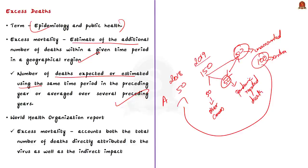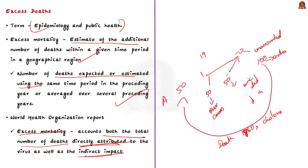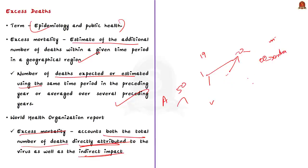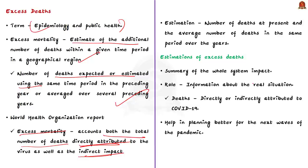India's death registration system started in the 1860s in response to a cholera pandemic — before that, births were registered but deaths were not. As per the WHO report, COVID-19 excess mortality accounts for both deaths directly attributed to the virus and indirect impacts such as disruption to essential health services. These estimations of excess deaths summarize the whole system impact of the pandemic and provide information about the real situation associated with COVID-19.